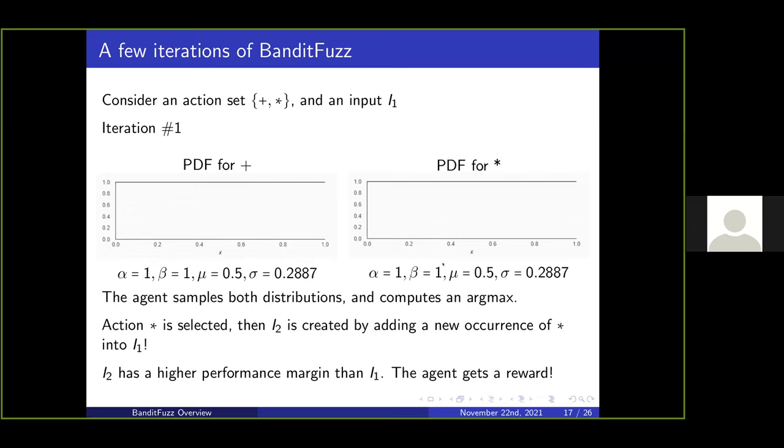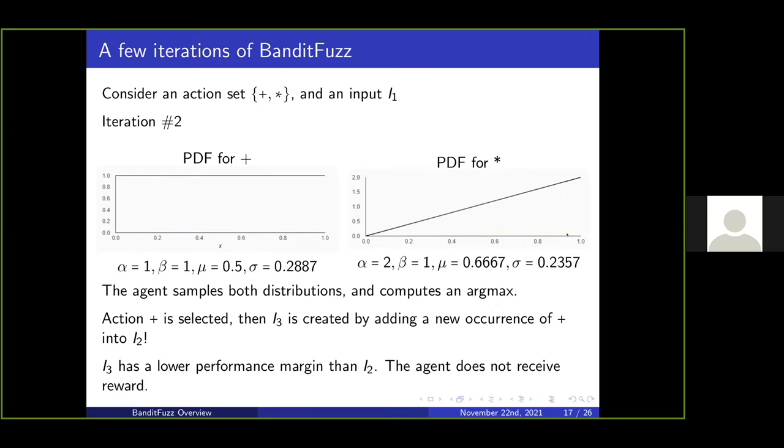To put this in context: say we have an action space of two grammatical constructs, plus and minus. For these two actions we have two probability density functions with alpha parameters initialized to one. Say we sample both functions, compute an argmax, and select multiplication. We create a new instance i2 by creating a new occurrence of multiplication from the existing input i1. If i2 has a higher performance margin than i1, we give the agent a reward and increment that action's alpha parameter. The mean of this distribution goes up and the deviation goes down, so it learns this is a better action.